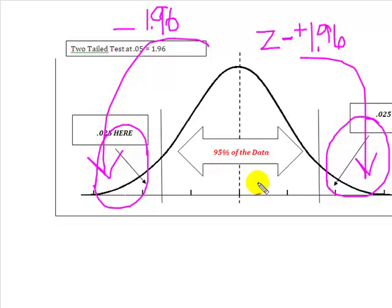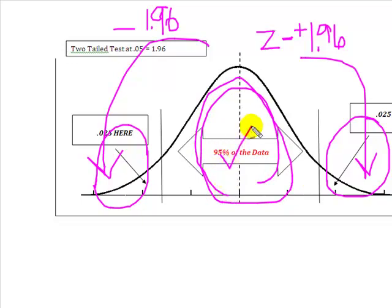Any time that we have a z-score or a calculated test statistic that falls in the non-critical, in this safety zone, then what we say is, do not reject H sub 0. There is not enough data to support that the mean weight of a bottle of Heinz ketchup is other than 16 ounces.